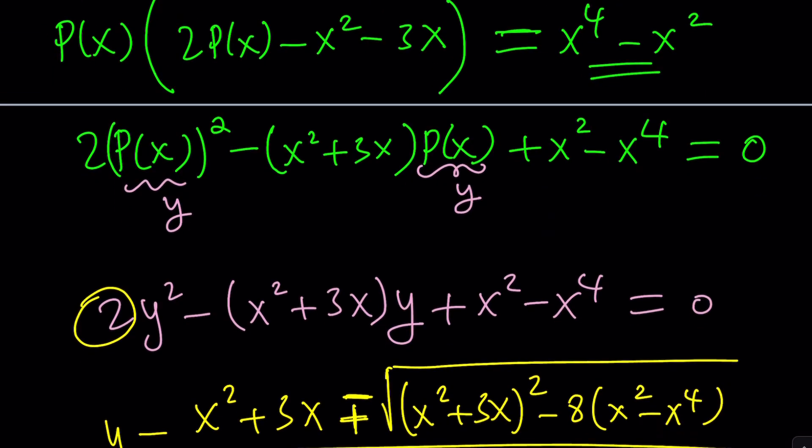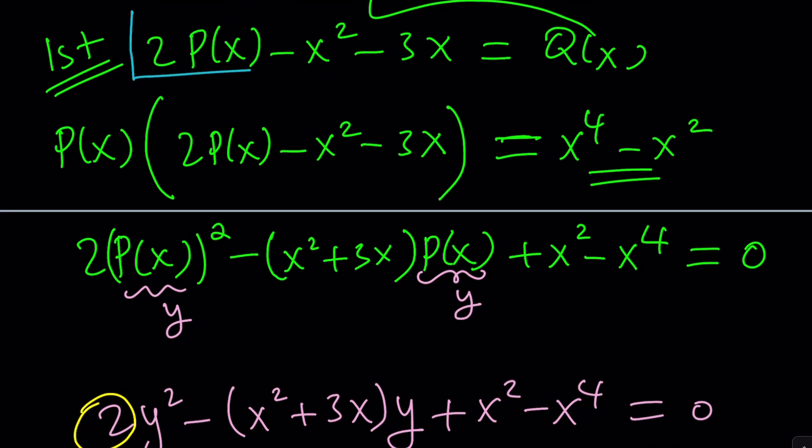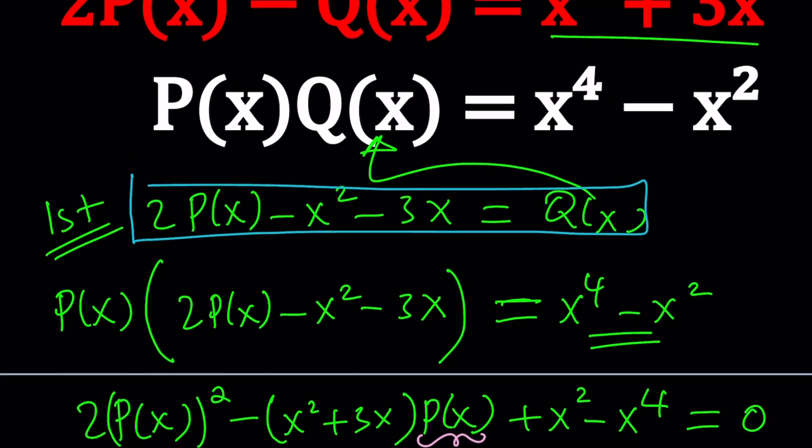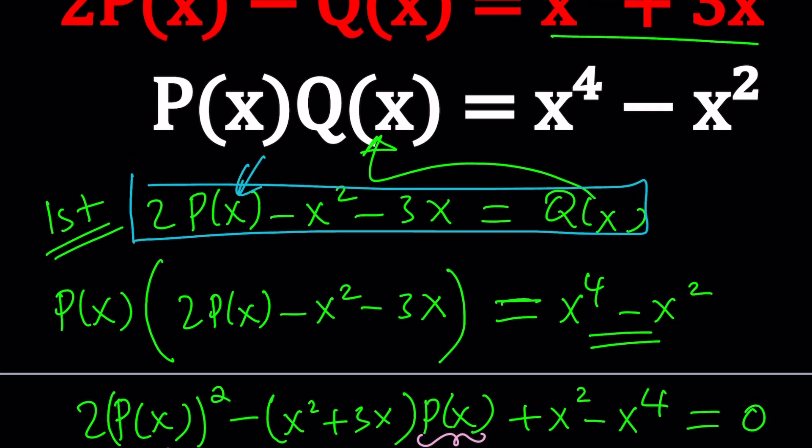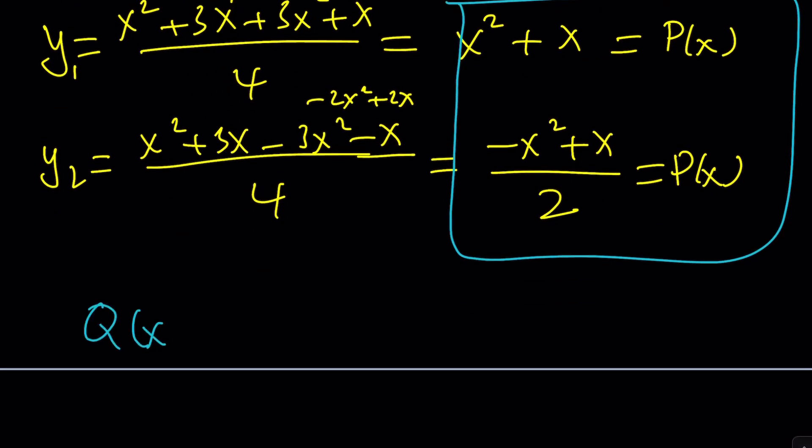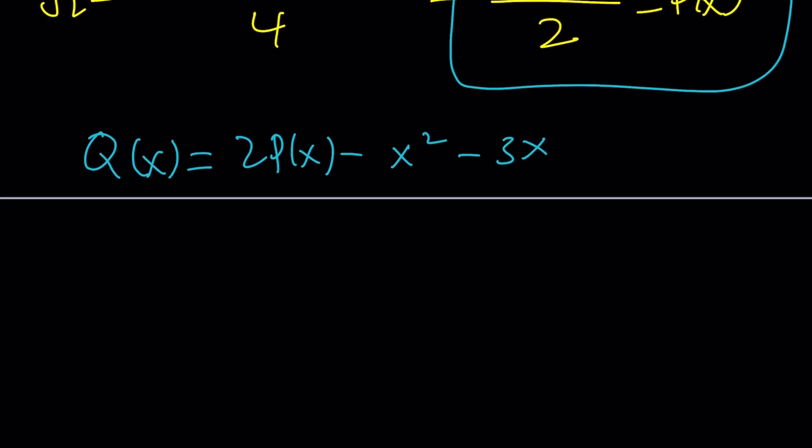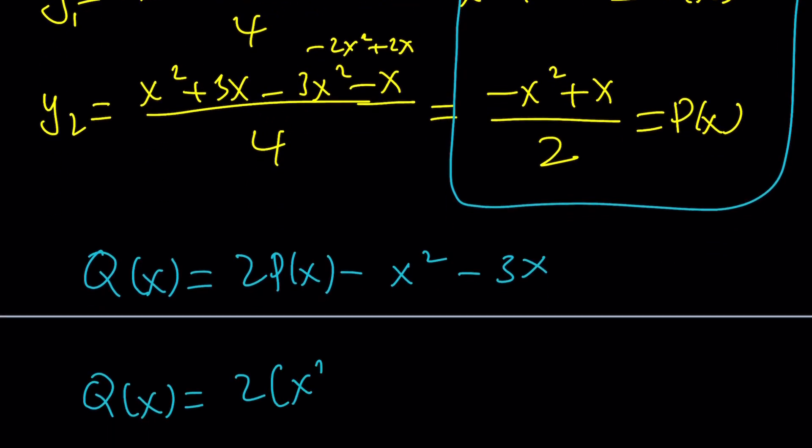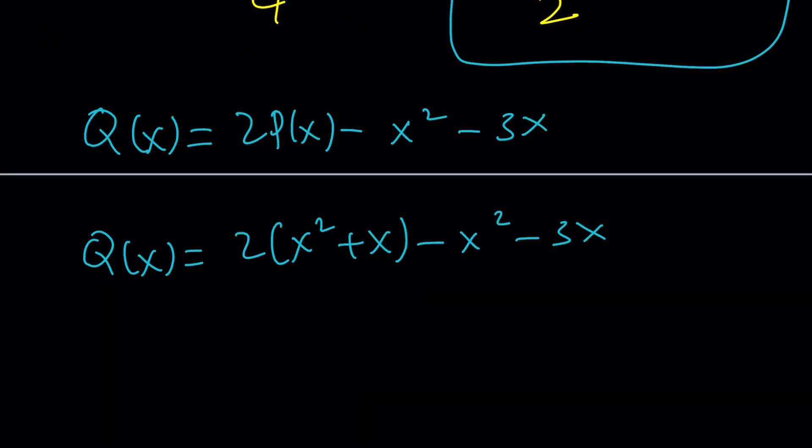But how do you solve for Q(x)? Easy. We have a formula. Remember, we replace Q(x) with this. And now we can go ahead and plug in P(x) to find Q(x). Make sense? Okay. So let's go ahead and copy that. Q(x) is going to be, what was it, two P(x) minus x squared minus 3x. If you use one of the solutions, you're going to get two times P(x), which is x squared plus x minus x squared minus 3x. And that'll give you x squared minus x.